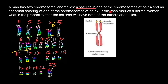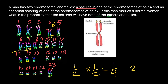Now let's read our question again. If this man marries a normal woman, what is the probability that the children will have both of the father's anomalies? We are looking for the probability that a child would inherit both father's anomalies. The probability that the child inherits the abnormal chromosome four is one half. The probability that the same child inherits the abnormal chromosome seven is also one half. So the calculation is easy: one half times one half equals one quarter, or 25%.